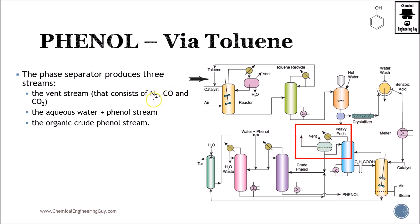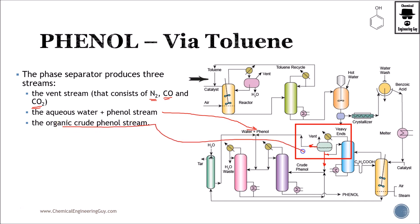In this specific case, we want to remove nitrogen gas, carbon monoxide and carbon dioxide. An aqueous water and phenol stream is produced, which is sent back, and the organic crude phenol stream is separated. To clarify: one stream here is the aqueous water stream and the other is the crude phenol stream.